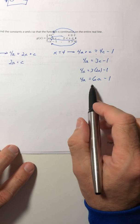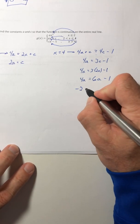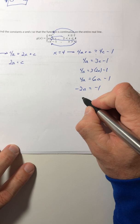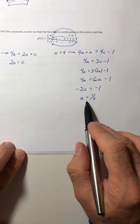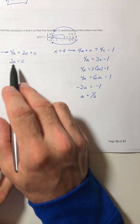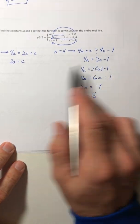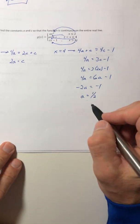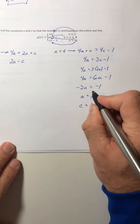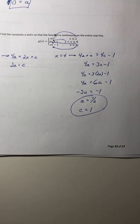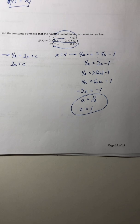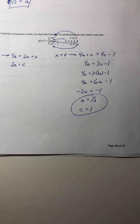Solving the system, a turns out to equal 1 half. Plugging back in, c equals 1. And that will do it for section 2.4. Try the homework, email me if you have questions, and we'll see how you do. Thank you.